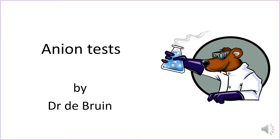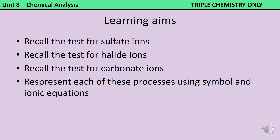This is the sixth revision video in a series about the GCSE chemistry topic of chemical analysis. You may also find it useful for inorganic A-level chemistry since these three tests are still examined in year 12, although we don't discuss the use of ammonia to confirm the halide tests. By the end of this video you should be able to recall the tests for sulfate ions, halide ions and carbonate ions, including what the positive result would be, and also represent these reactions with balanced symbol equations and ionic equations.